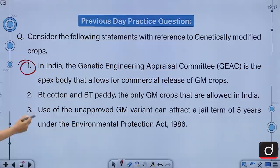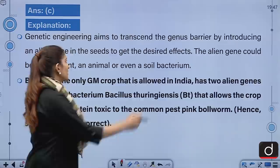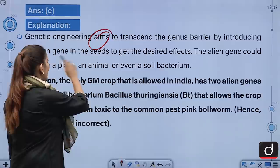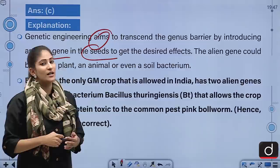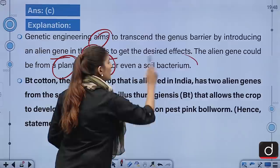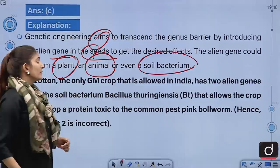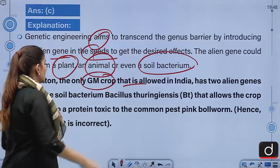Genetic engineering aims to transcend the genus barrier by introducing an alien gene in the seeds to get the desired effect — such as protection from pest or infestations, or to increase nutrient content. The alien gene could be from a plant, an animal or even a soil bacterium. In India, BT cotton is the only GM crop that is allowed, and it has two alien genes from the soil bacterium Bacillus thuringiensis.